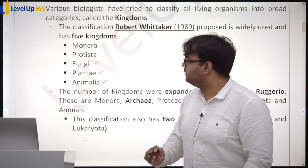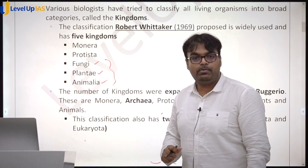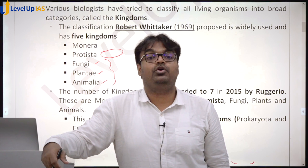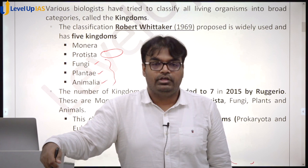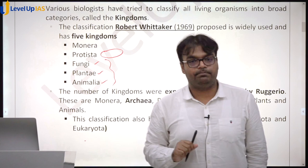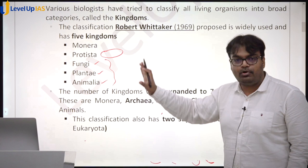Protista is basically a hodgepodge kingdom — species which we are not able to fit into Fungi, Plantae, or Animalia but are eukaryotic go here. A very common example of Protista is Plasmodium, which causes malaria. Malaria is not a bacterial disease; malaria is not a viral disease. Malaria is caused by Plasmodium, which belongs to this kingdom.